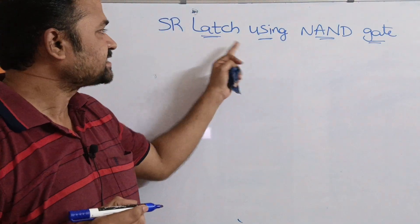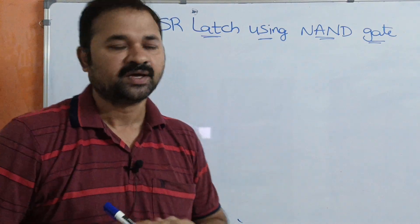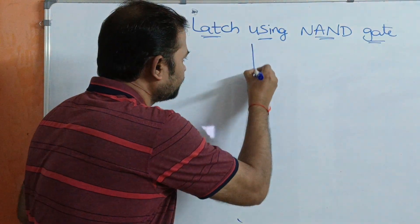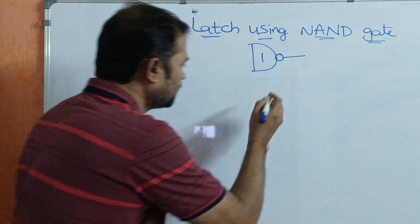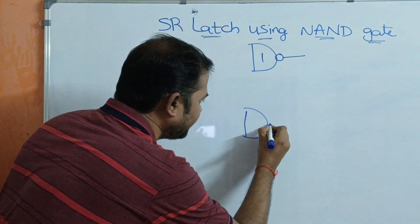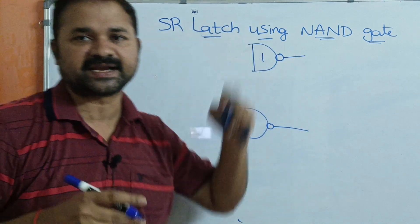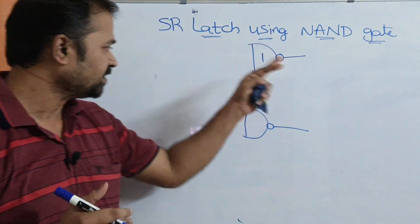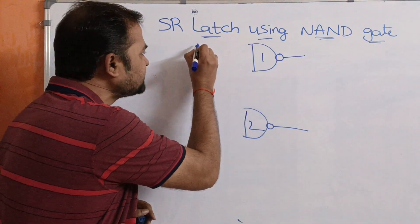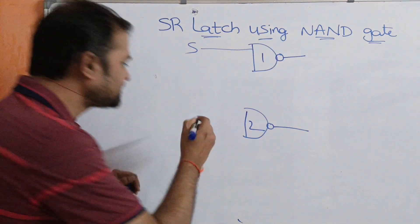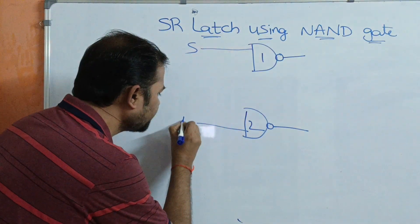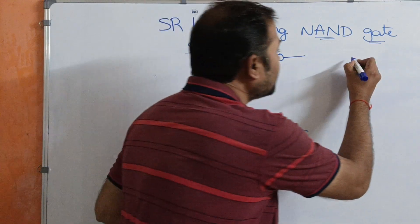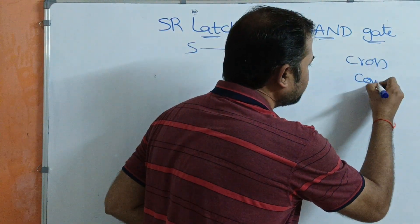Let us discuss about SR latch using NAND gate. Here we require two NAND gates. The first NAND gate accepts S as the input, and the second NAND gate accepts R as the input. We can call these NAND gates as cross-coupled NAND gates.